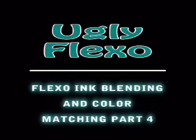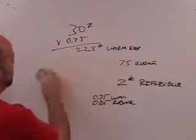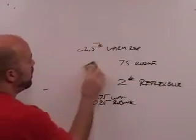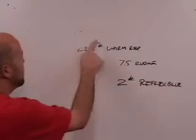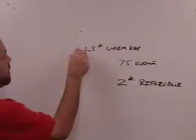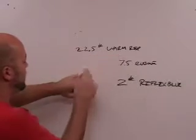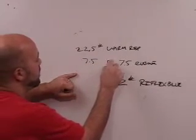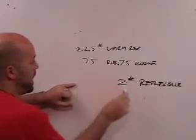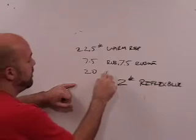If it were as simple as saying I currently have 22.5 pounds of warm red, 7.5 pounds of rubine, and I'm adding to it 2 pounds of reflex blue, it'd be very easy for us to calculate that formula.